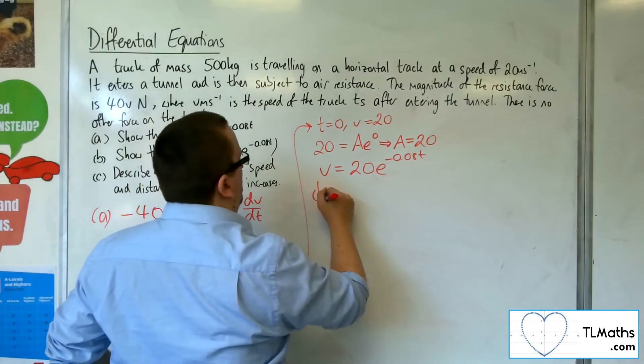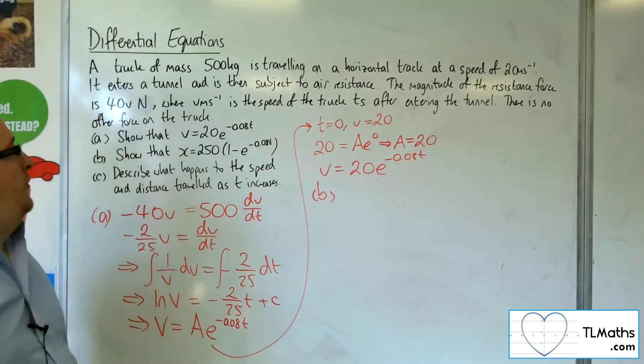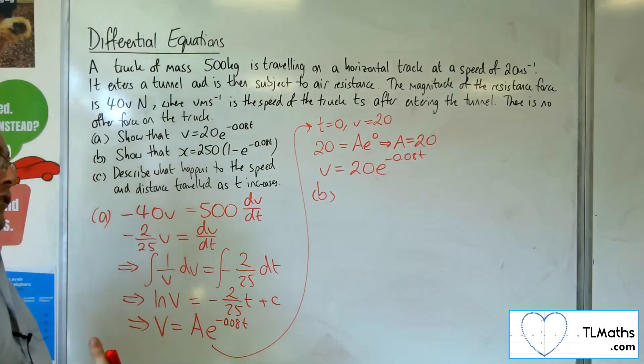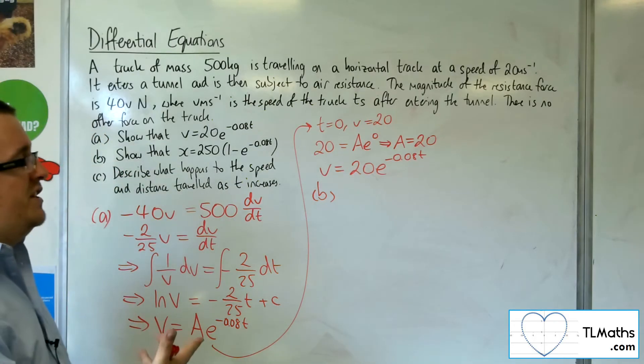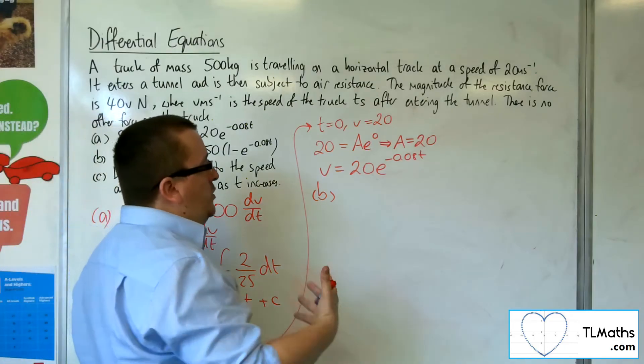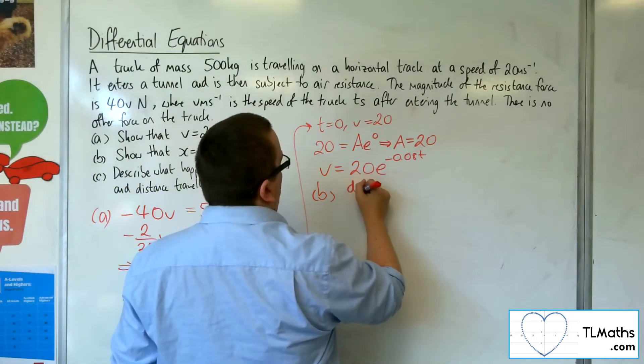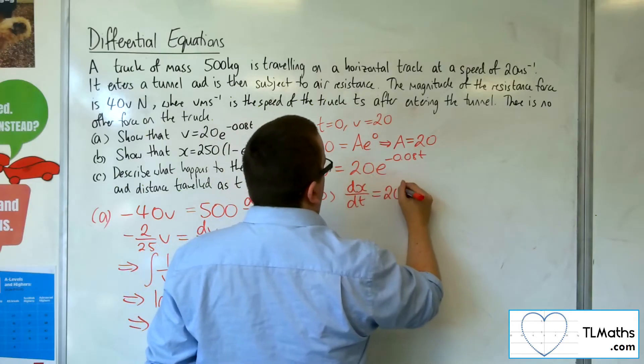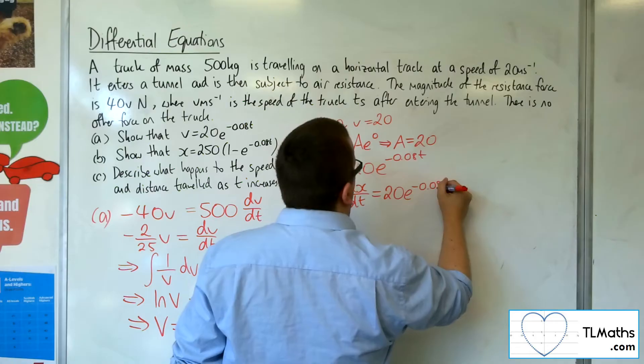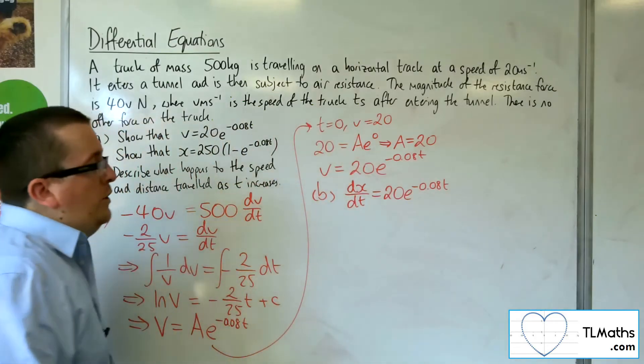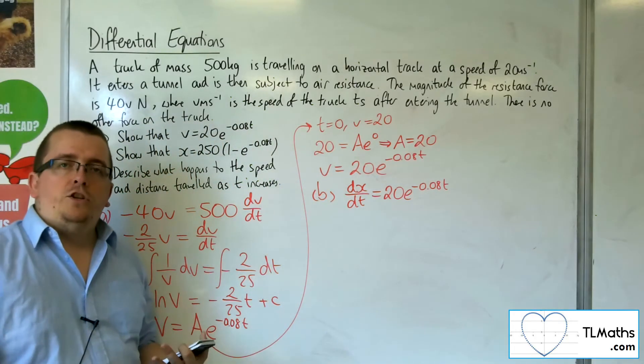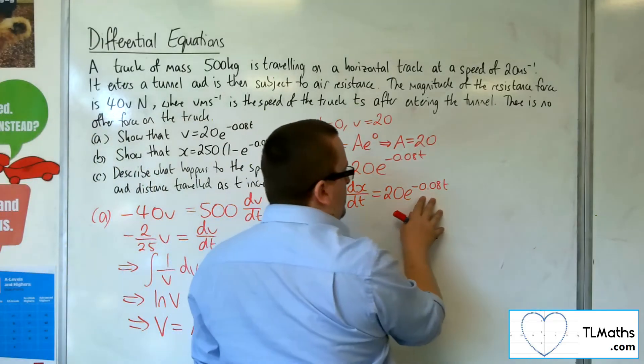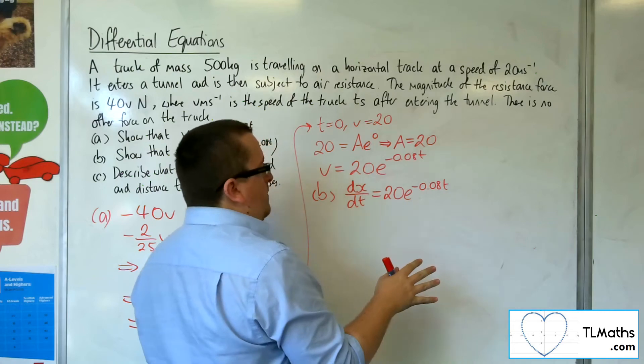Now as for part B, show that X equals 250 times 1 minus e to the minus 0.08T. The velocity is the change in displacement over time, so that would be dX by dT is 20e to the minus 0.08T. Now you could either multiply both sides by dT and do separation of variables, or because this is in terms of T, I can just integrate both sides.